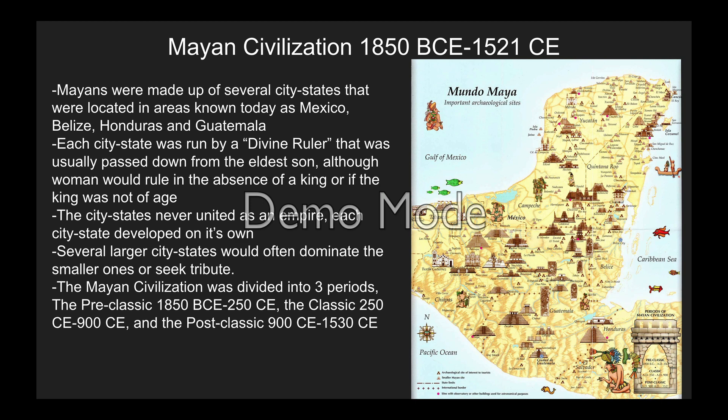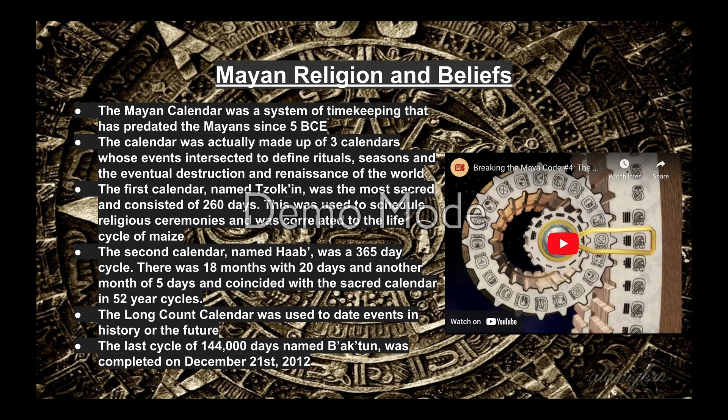Mayan civilizations were made up of several city-states located in areas known today as Mexico, Belize, Honduras, and Guatemala. Each city-state was run by a divine ruler, usually passed down to the eldest son, although women would rule in the absence of a king. City-states never united as an empire; each developed on its own, with larger city-states often dominating smaller ones or seeking tribute. The Mayan civilization had three periods: the Pre-Classic (1850 BCE), the Classic (250 CE to 900 CE), when most pyramids and art were created, and the Post-Classic (900 CE to 1530 CE), when the Spaniards arrived.